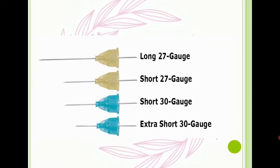In this slide I'm going to talk about the needle of the anesthesia syringe. There are two types of needle: short and long. In the case of maxillary anesthesia we have to use a short needle, but in the case of mandibular teeth anesthesia we have to use a long needle.